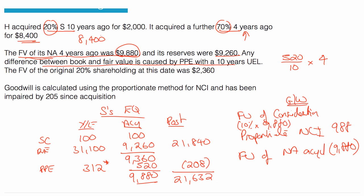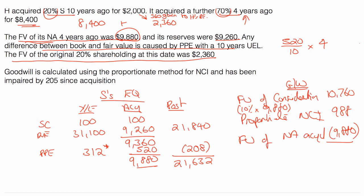That's what it cost, the 2,000. What's it worth at the date of acquisition 4 years ago? And it says the fair value of the original shareholder at the date was 2,360. So that's the fair value of the consideration 4 years ago, making a 360 gain. And if you remember, you put the gain to H's retained earnings. So 8,400 plus 2,360. Add those two together and you get 10,760.